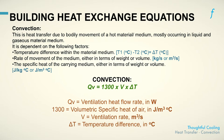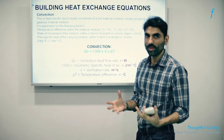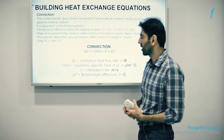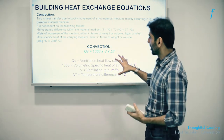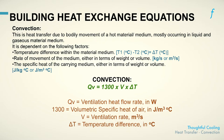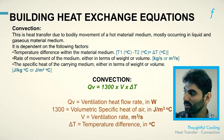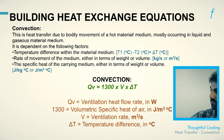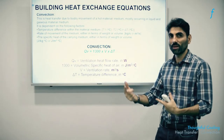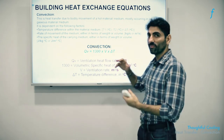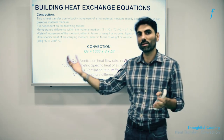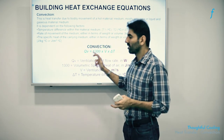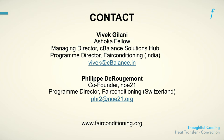For engineering professionals or students who seek to use the principles of thermodynamics to design cooling systems employing convection, this equation can be used to understand the relative importance of various parameters on the amount of convective heat transfer. The convective heat transfer Qv is directly proportional to the ventilation rate in cubic meters per second, and to the temperature difference between the warm and cool parts of the fluid — the greater each of these, the greater the convective heat transfer. If you have other questions, please contact us at our email addresses or through our portal at fairconditioning.org.